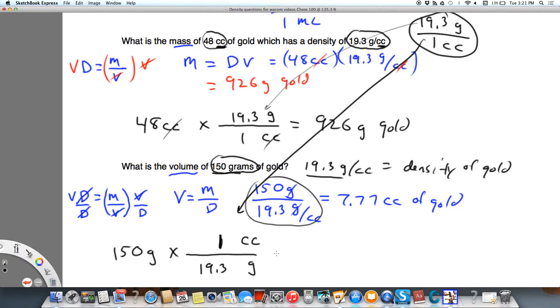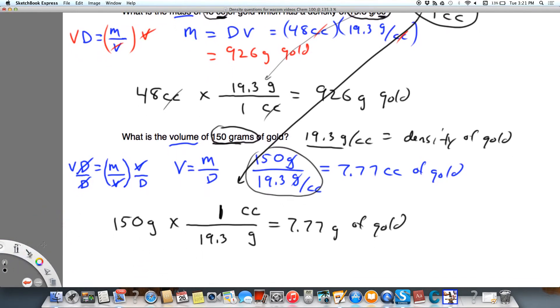And we get the same answer, 7.77 cc of gold. So when we see it on the bottom like this, let's review a little bit. That's the same thing as saying 150 grams divided by 19.3 grams. And that means those cancel, and it's multiplying by 1.